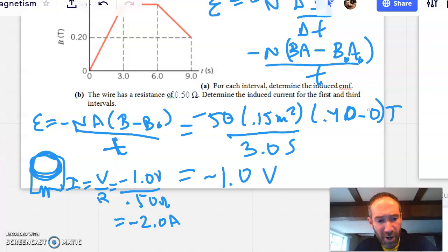Now for the second part, it's basically the same thing, except if you notice, there's only half as much change in the same amount of time. And so for the second part, rather than 0.4 and 0, I'm going to have a final amount of 0.2 and an initial amount of 0.4.